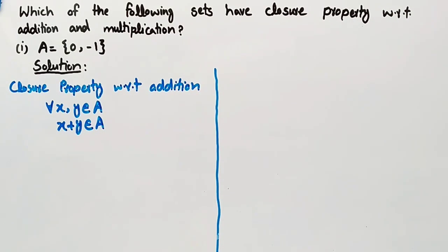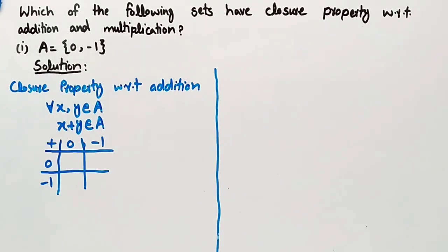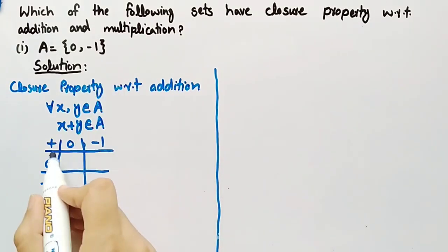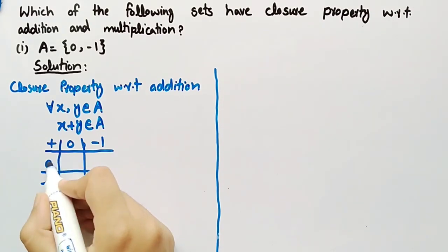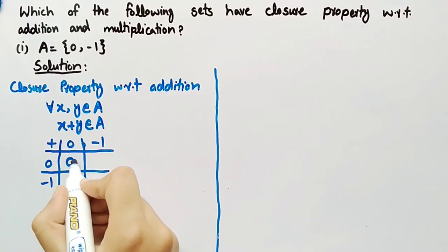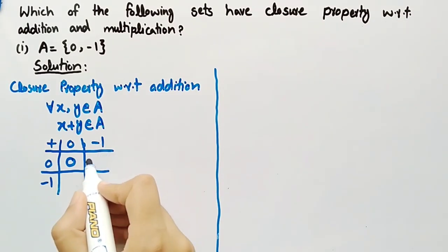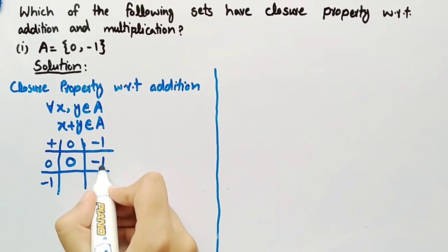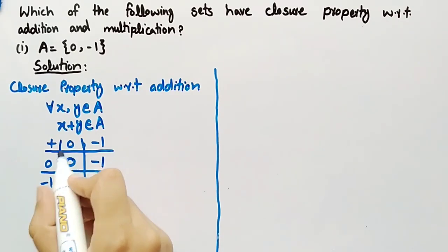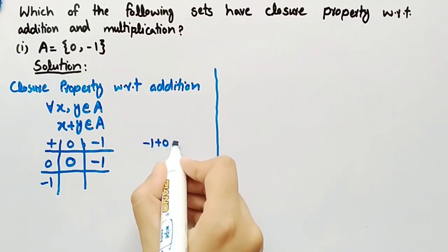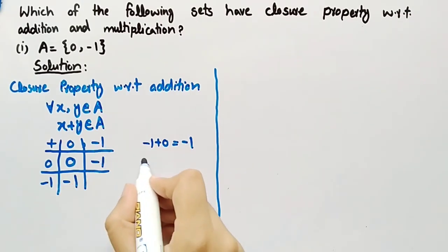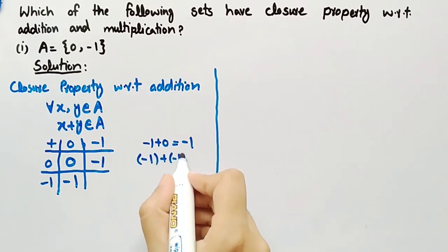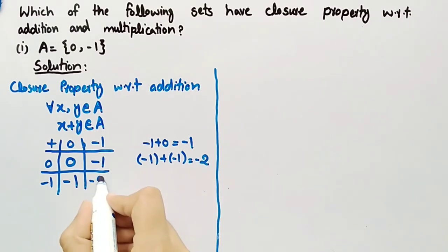Now we will construct a table to check closure property with respect to addition on set A. In this table we have written each element of set A in the first row and first column, and now we will add them one by one. Here 0 + 0 = 0. Here 0 + (-1) = -1. Here (-1) + 0 = -1. And (-1) + (-1) = -2, so here we will write -2.